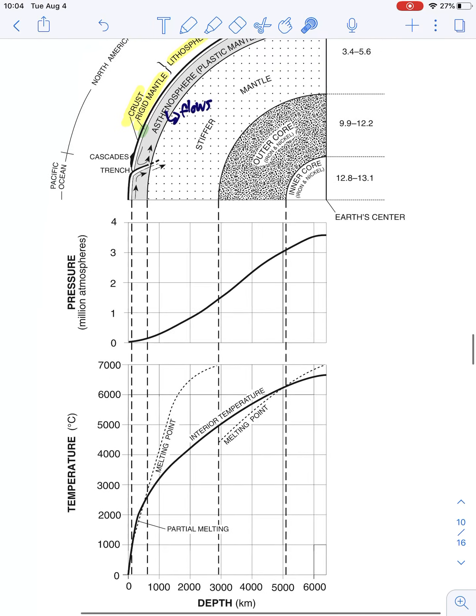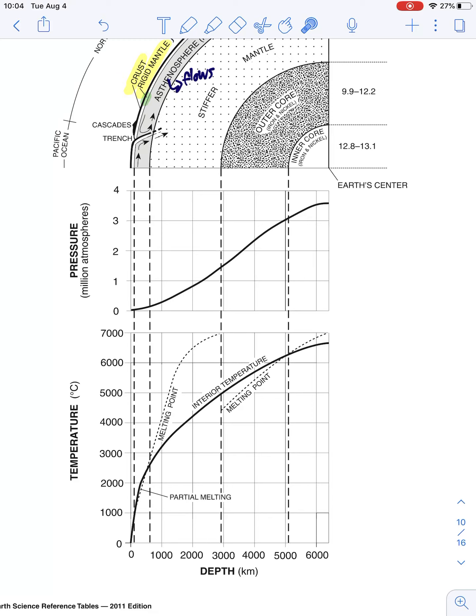We also need to be able to look at the temperature and pressure with depth. So now, these are two different graphs. I have pressure over here in millions of atmospheres, and then I have temperature in Celsius, and I have depth at the bottom in kilometers.